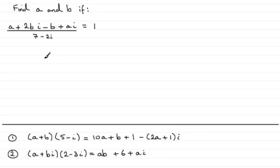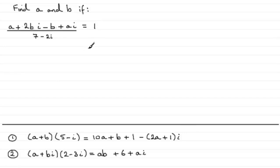So how do we solve an equation like this? a plus 2bi minus b plus ai, all divided by 7 minus 2i, equals 1. We've got to find the values of a and b. What we need to do is clean up the top first — group together the real parts and the imaginary parts.